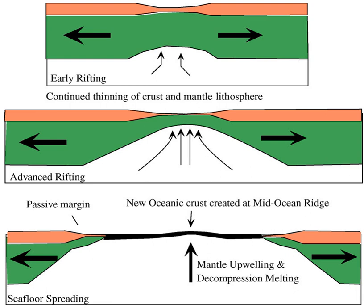Active subsidence, sedimentation, growth faulting, and fluid formation and migration are all active processes on passive margins. Passive margins are only passive in that they are not active plate boundaries.